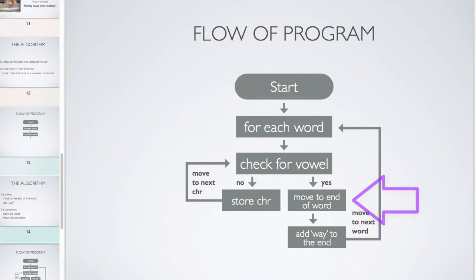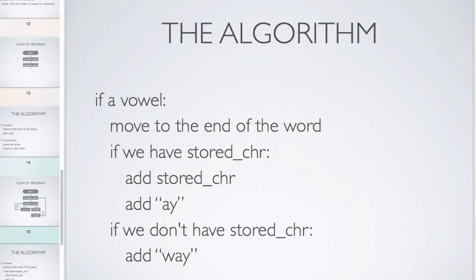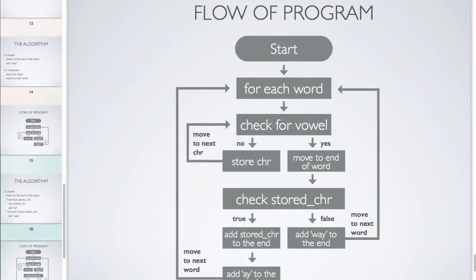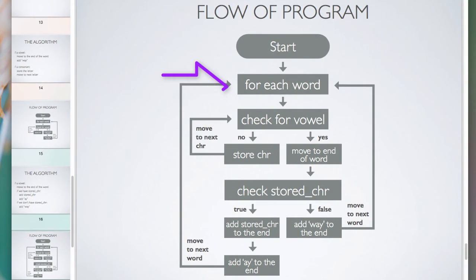The issue here is if we've stored characters and then we hit a vowel, we're not adding 'way' anymore. So before we add 'way', we need to check: do we have any stored characters? If we have stored characters, add the stored characters then add 'ay'. If we don't have any stored characters, then add 'way' instead.